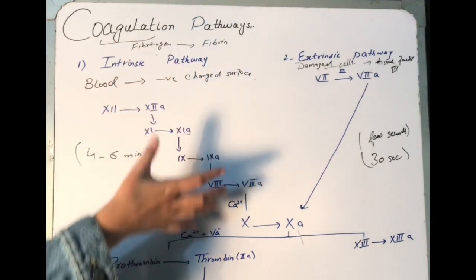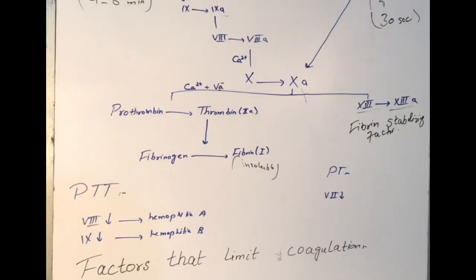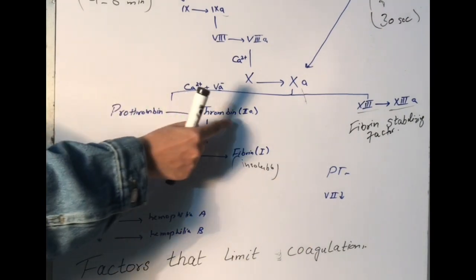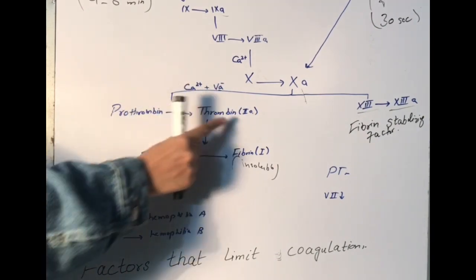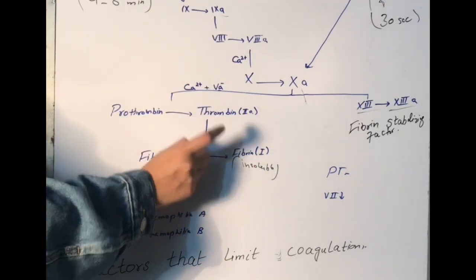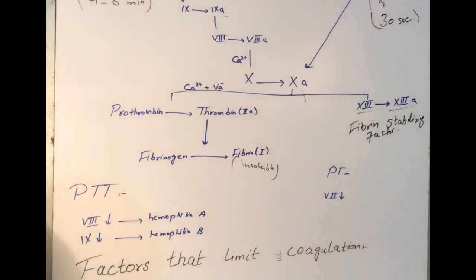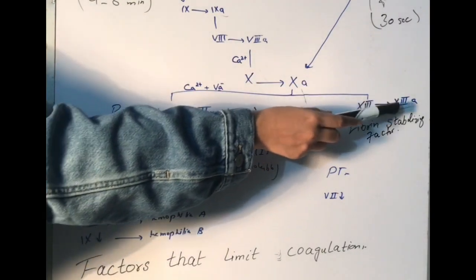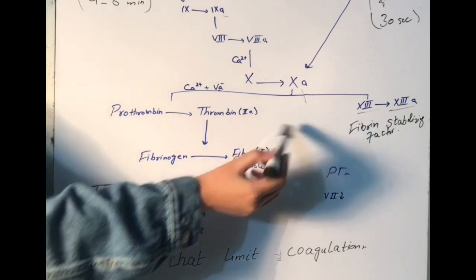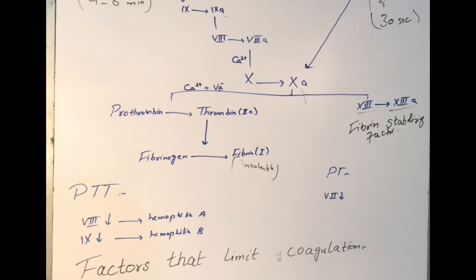Both the intrinsic and extrinsic pathways have activated factor 10, and from here the story is similar in both cases. Factor 10a converts prothrombin into thrombin, and here calcium and factor 5 are needed. This thrombin converts soluble fibrinogen into insoluble fibrin, which is factor 1 — fulfilling the definition of coagulation. Additionally, thrombin activates factor 13, the fibrin stabilizing factor, which forms fibrin polymers that create a meshwork around the platelets in the primary platelet plug, leading to formation of the secondary platelet plug.